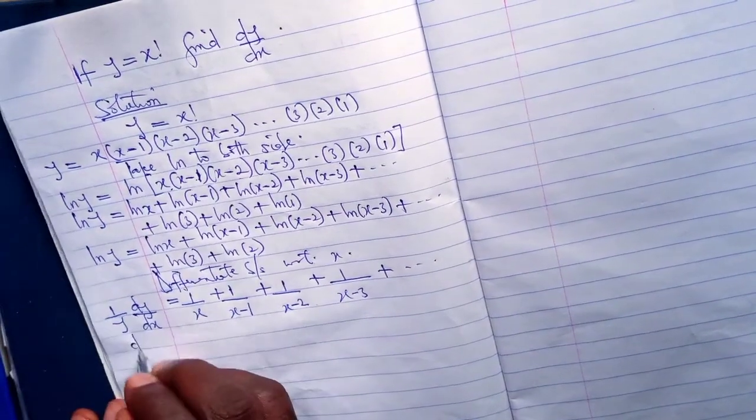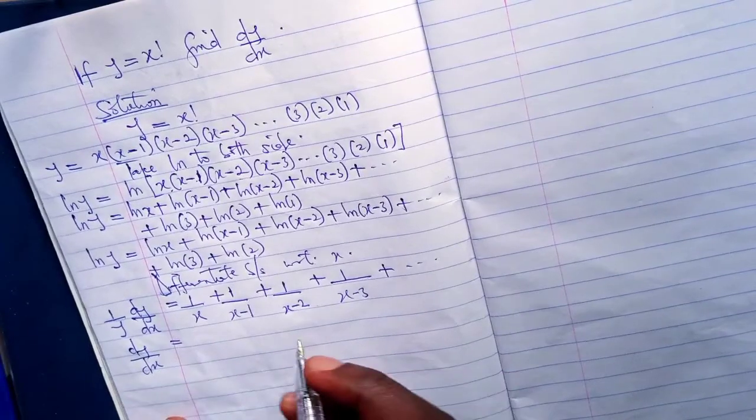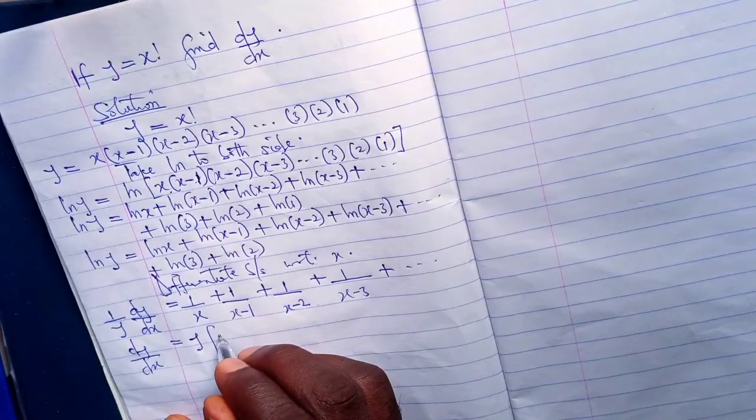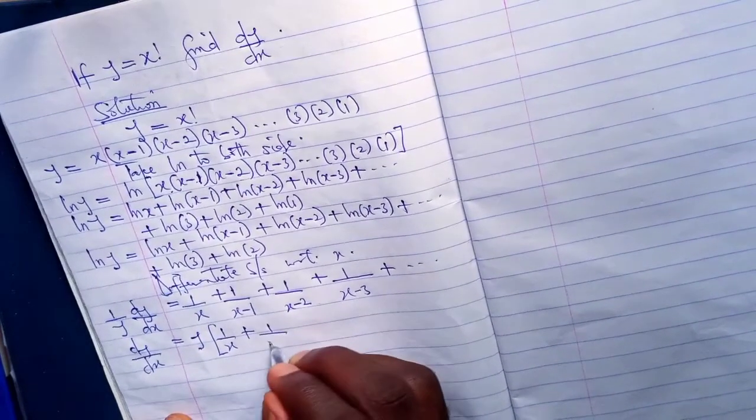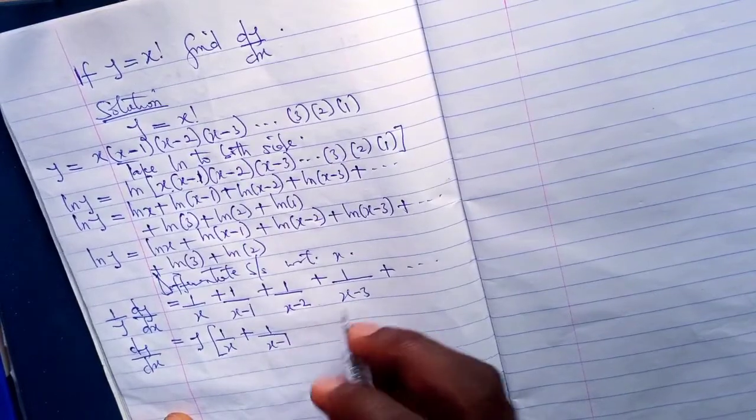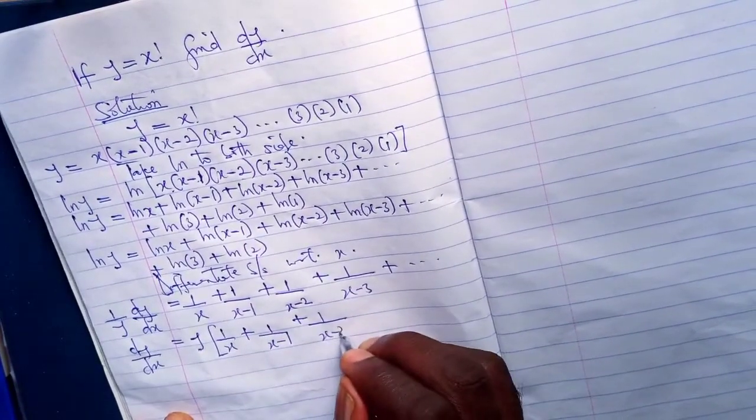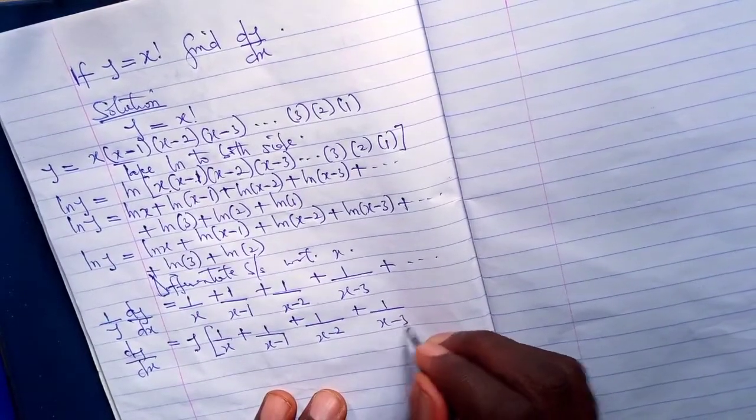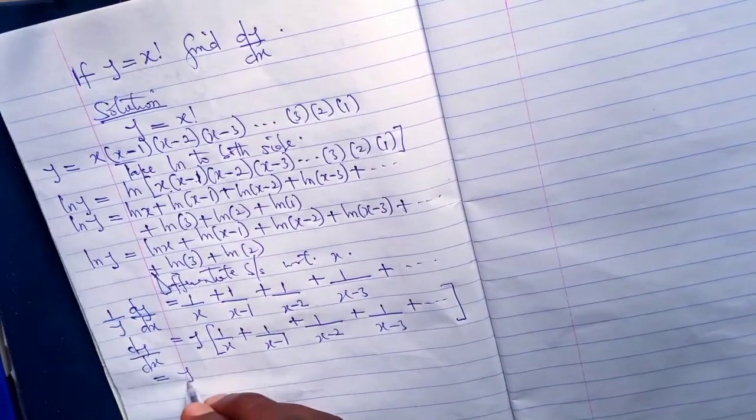Now, dy over dx will be equal to y, because we cross multiply, into 1 over x plus 1 over x minus 1 plus 1 over x minus 2 plus 1 over x minus 3 plus dot dot dot.